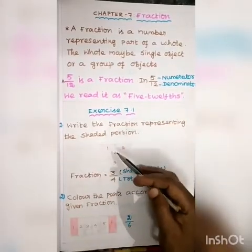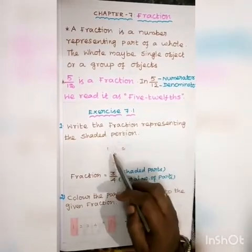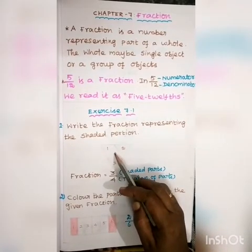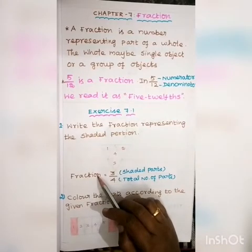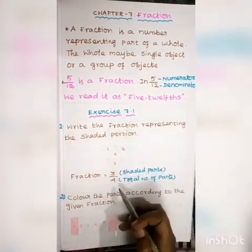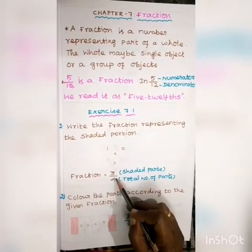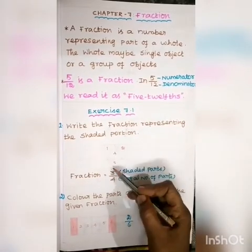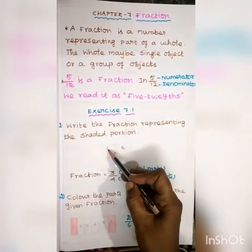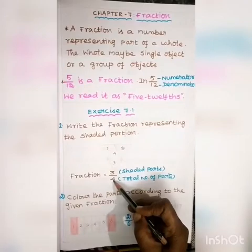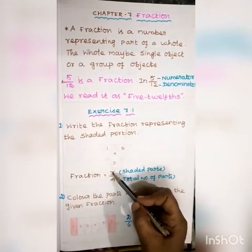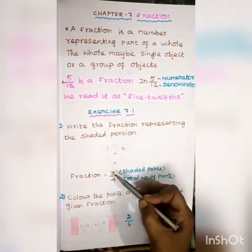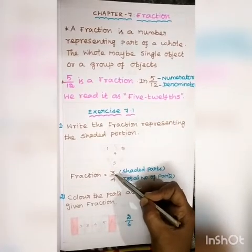First, the fraction is made up of a number of parts. The total number of parts is 1, 2, 3, 4 — four parts. The denominator is the total number of parts. The numerator is the number of shaded parts.